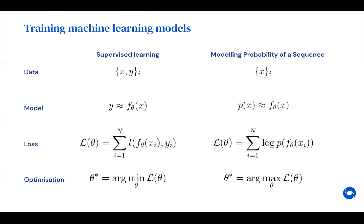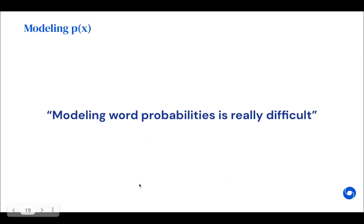What we'll show now is how we can model the probability of a sequence. In this case we don't necessarily have targets; we might just be provided a corpus of text, and what we're trying to optimize is the probability of those sentences appearing. So we're modeling p(x) — just assume x is a sentence. We're trying to learn a model that approximates this probability, and the loss function is defined as the sum of log probabilities, which we're trying to maximize.